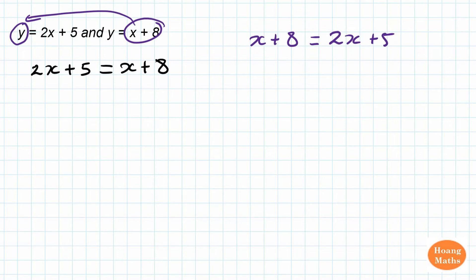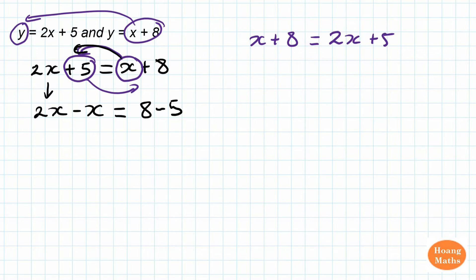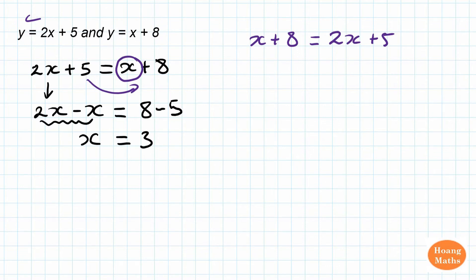Now I just solve these equations. I move x to one side and 5 to the other side. So 2x, I move x over, becomes minus x. And this 8 I keep, then positive 5 I move over, becomes minus 5. So 2x minus x leaves me 1x, so I just write x. And 8 minus 5 is 3. So x is equal to 3.